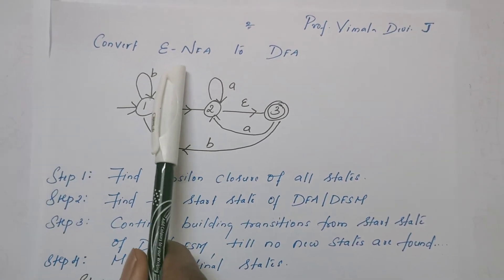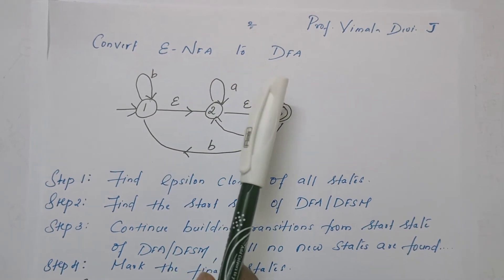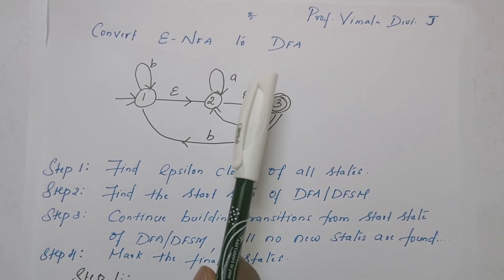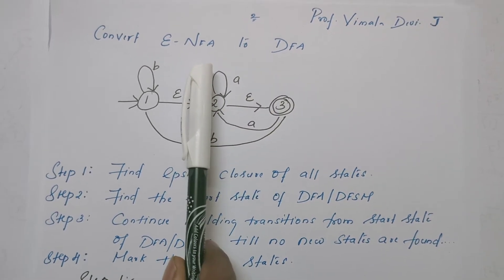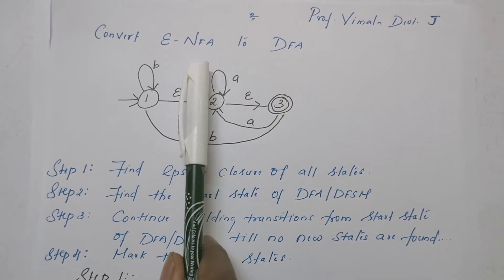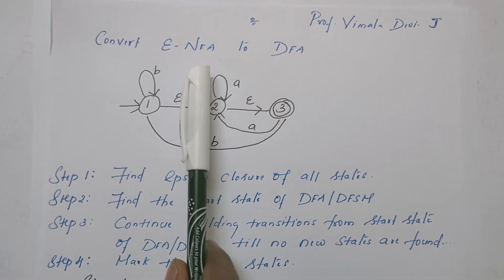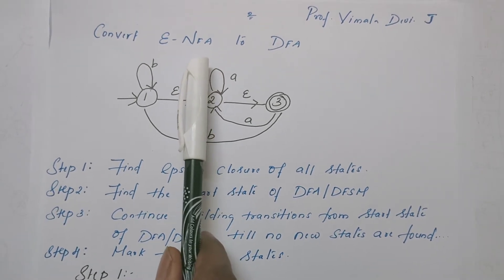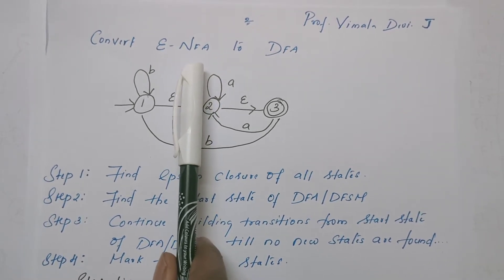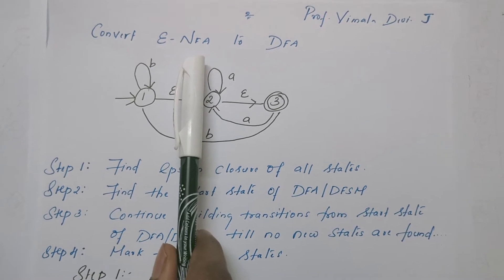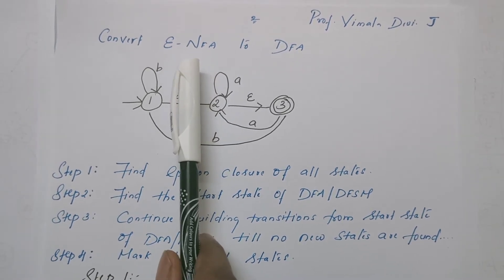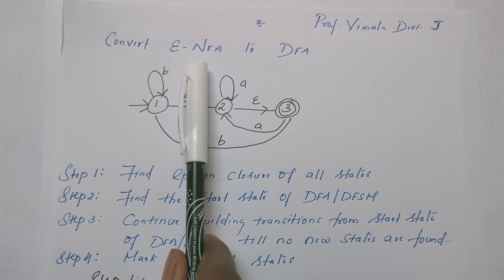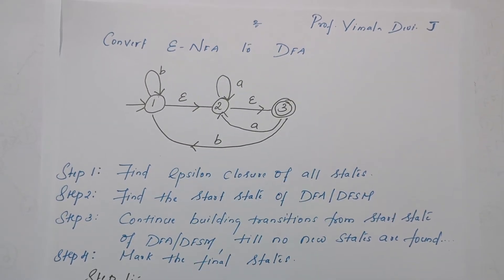Today I am going to talk about Automata Theory and Computability — specifically, how to convert Epsilon Non-Deterministic Finite Automata into Deterministic Finite Automata. This is a topic I missed in my previous video. We can also call it Epsilon NFSM (Non-Deterministic Finite State Machine) to Deterministic Finite State Machine.